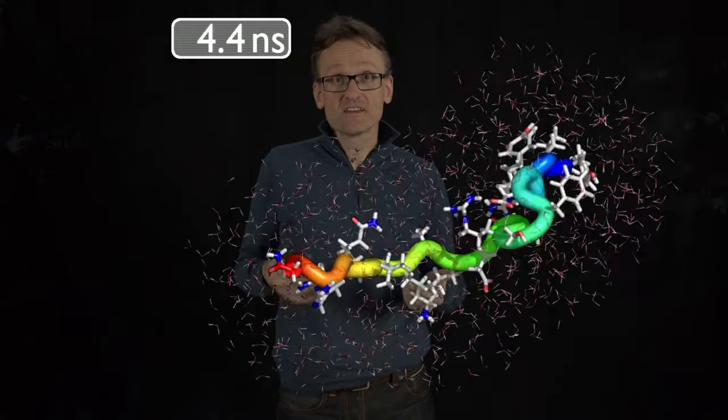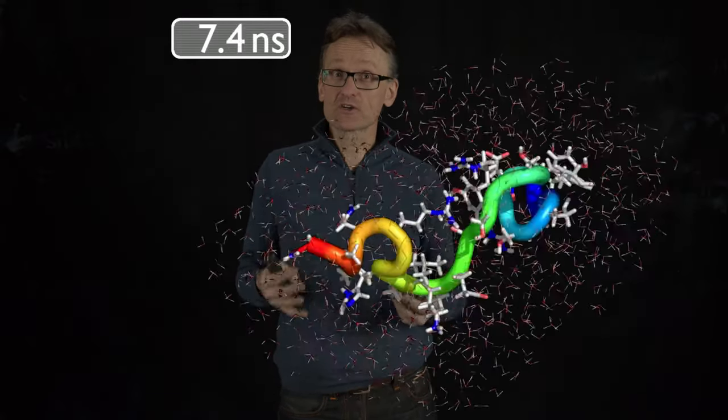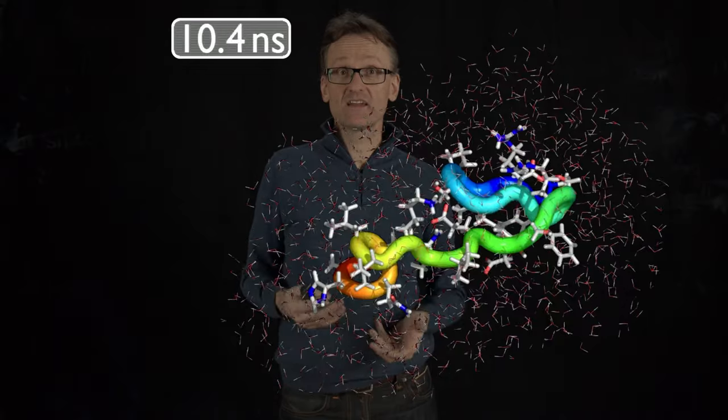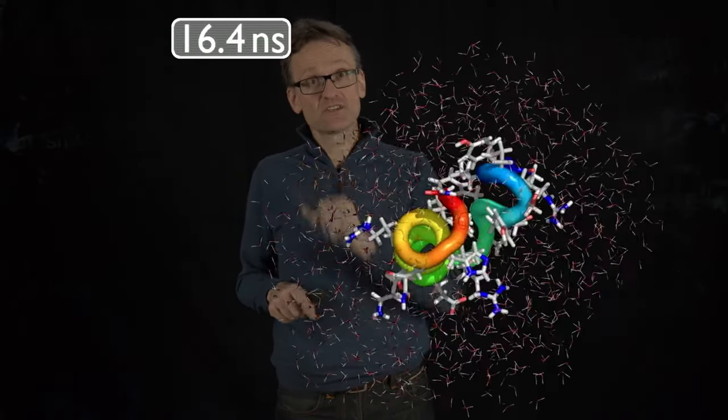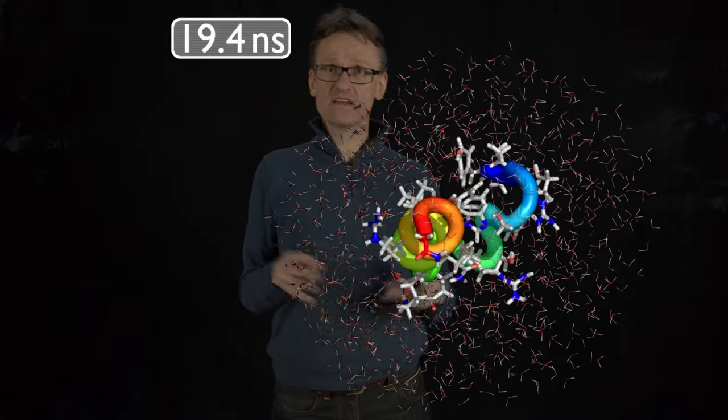So with Diffusion Collision, the idea is that secondary structure elements should form rapidly and independently. And here you see the helix forming, and within a few more nanoseconds, here the beta sheet had also formed. It looked to be independent, right?